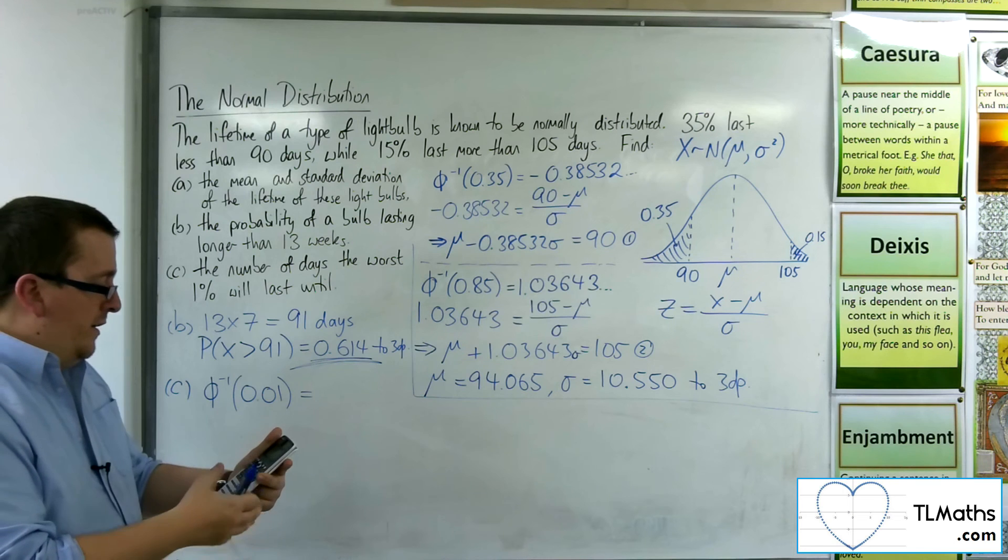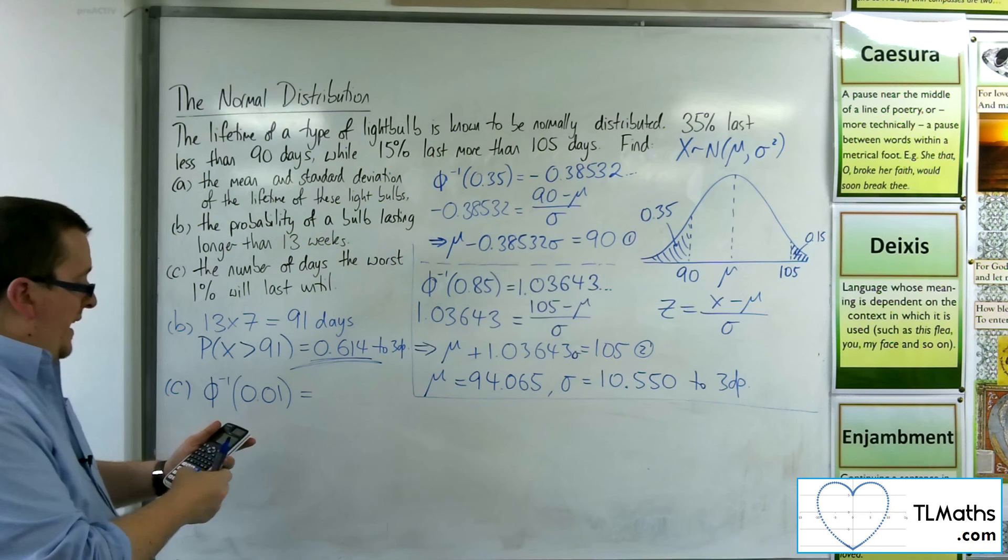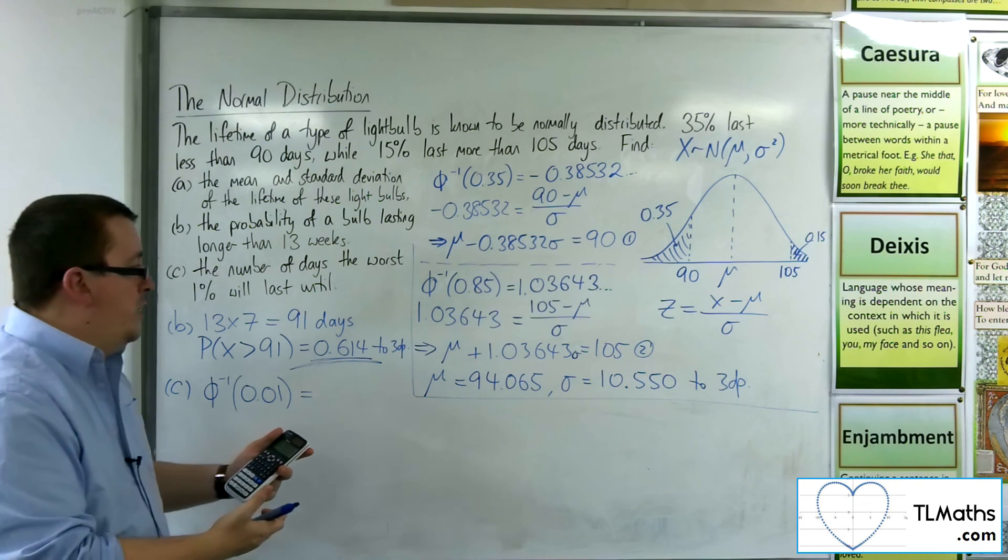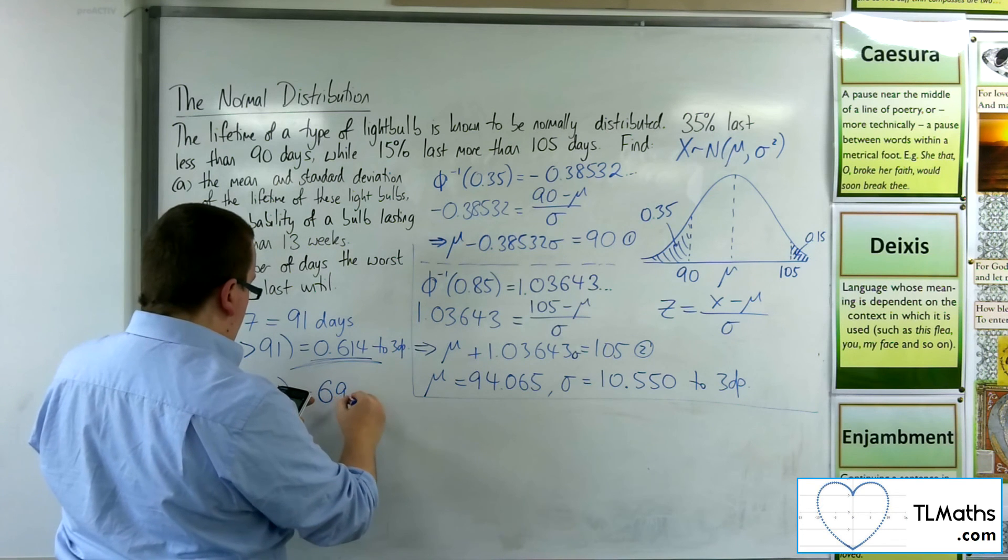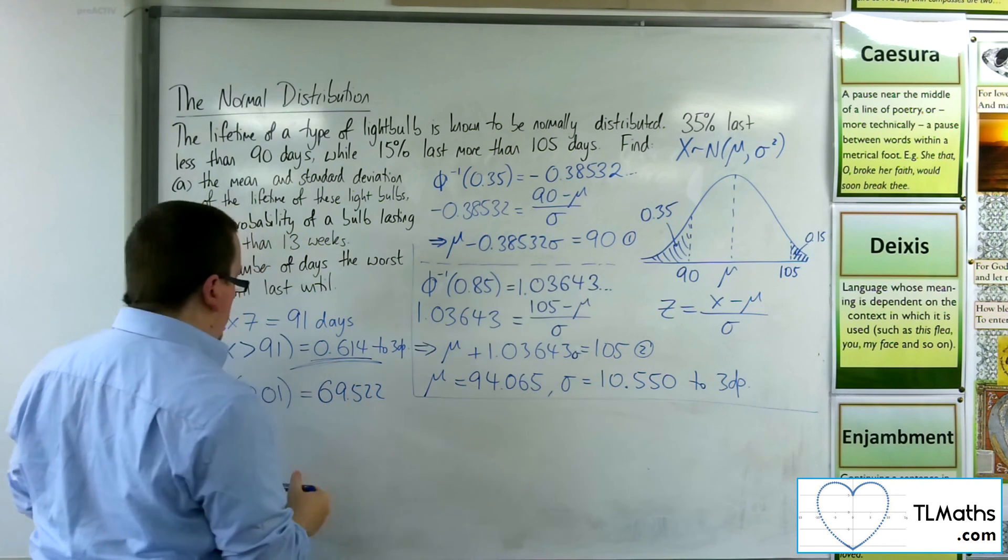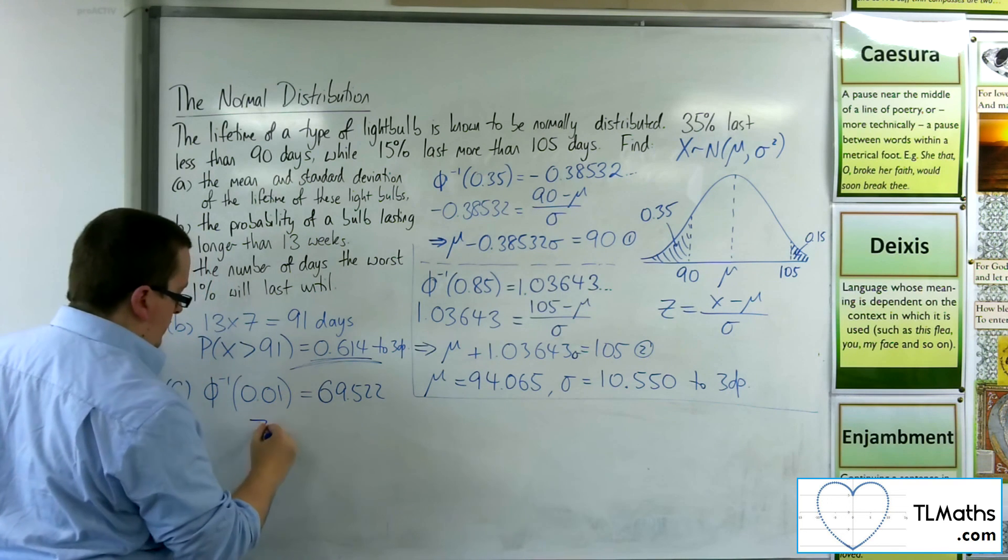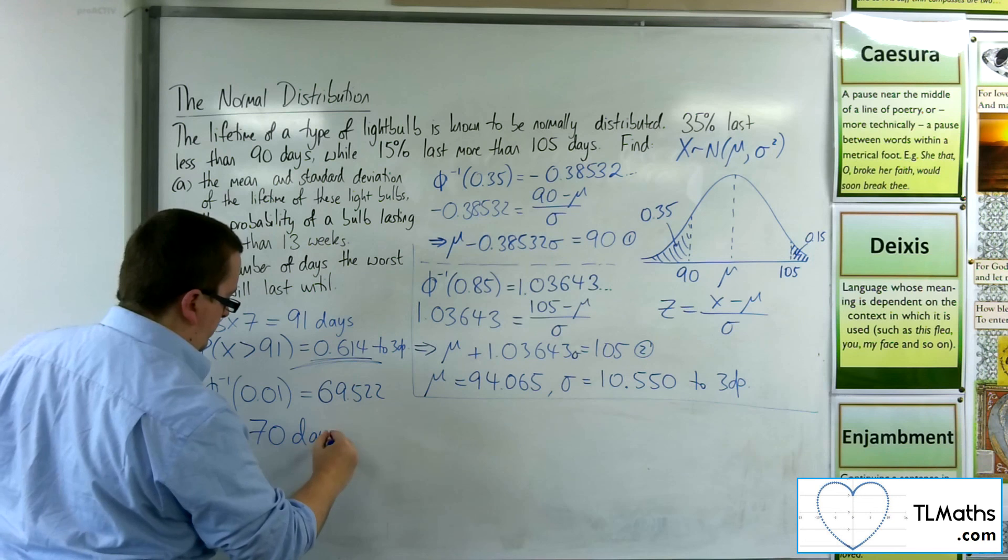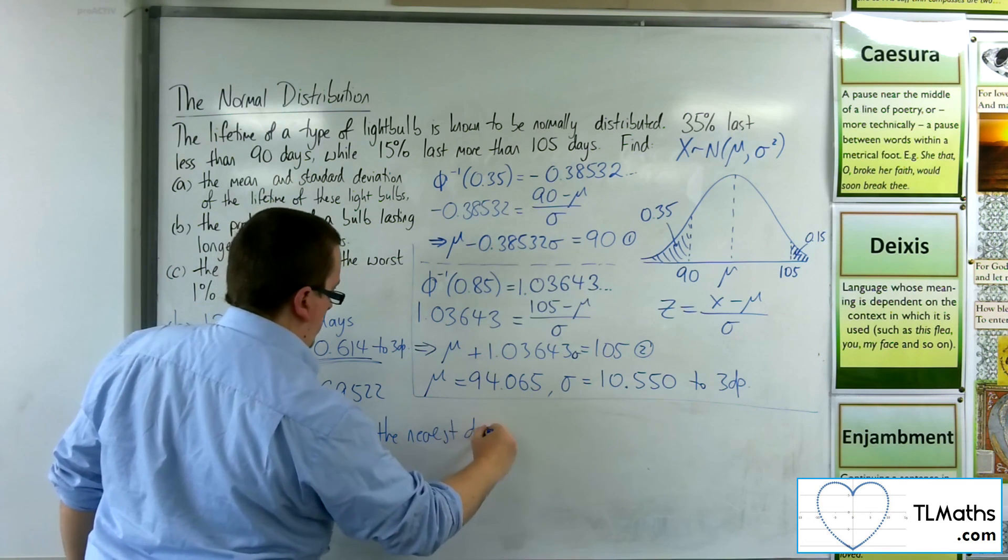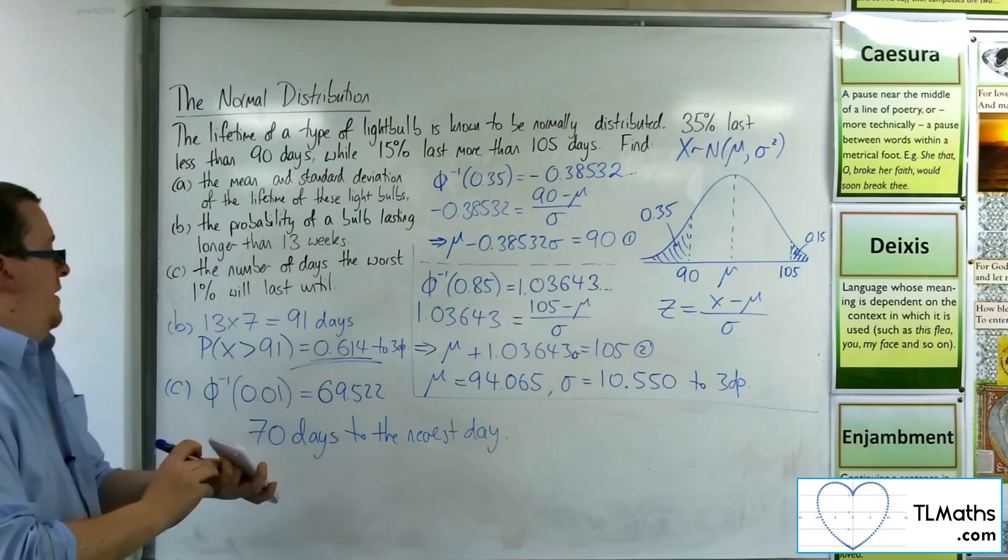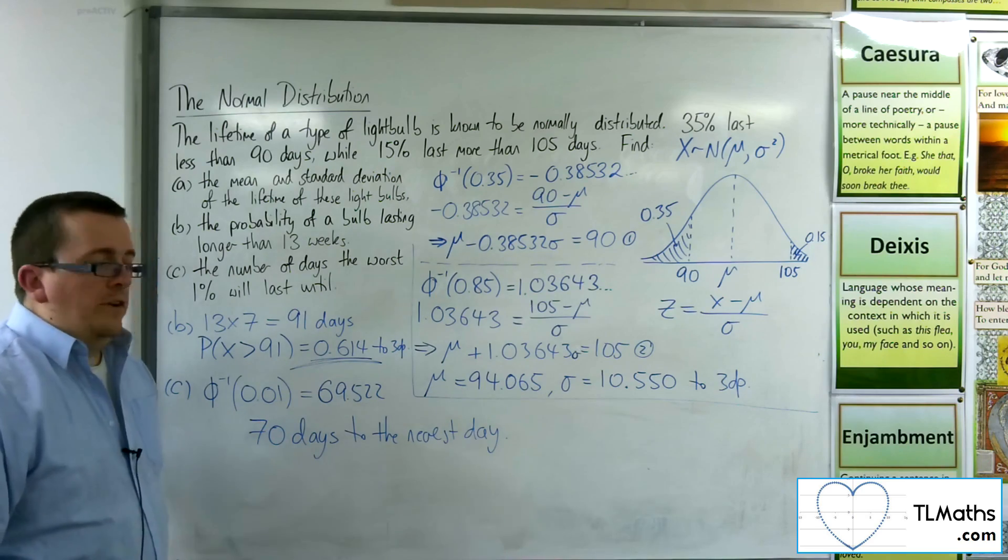Now I can type that directly into my calculator now. Going on to number 7, going on to the inverse normal number 3. The area is 0.01. My calculator saved the sigma and mu from before, which is great. So I can just press equals. And it's 69.522. So 69 or 70 days to the nearest day. So the worst performing 1% last less than 70 days.